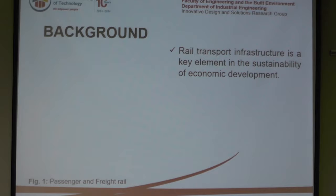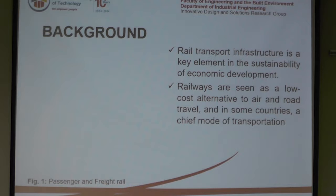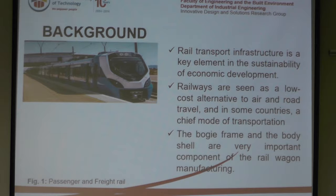This is just background on how transport infrastructure is a very key component in the sustainability of economic development. Rail transport is seen as a very low-cost alternative to air and road transport, and in some countries it's seen as the chief mode of transportation. The bogey frame and the body shell are very key components of rail wagon manufacturing.